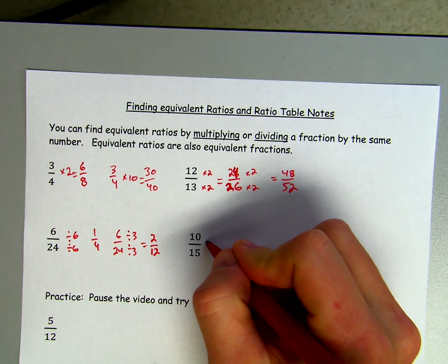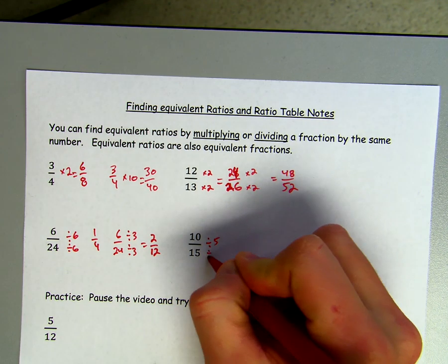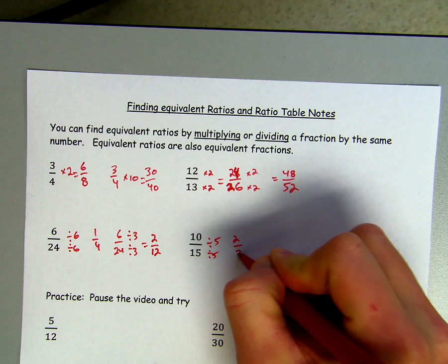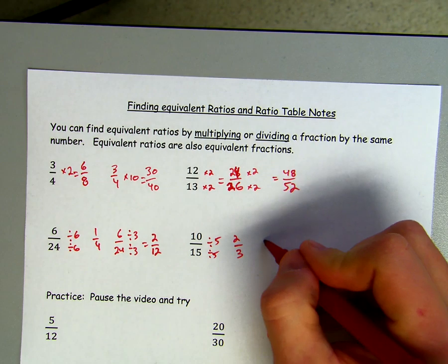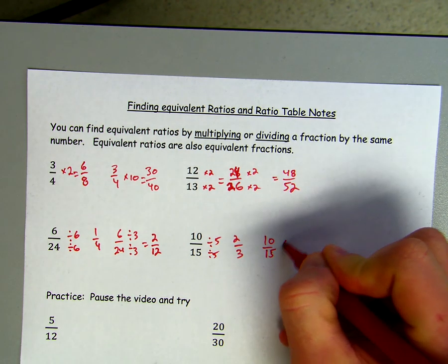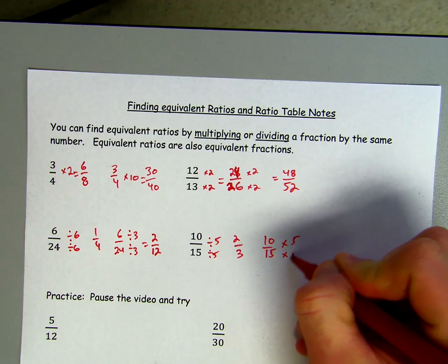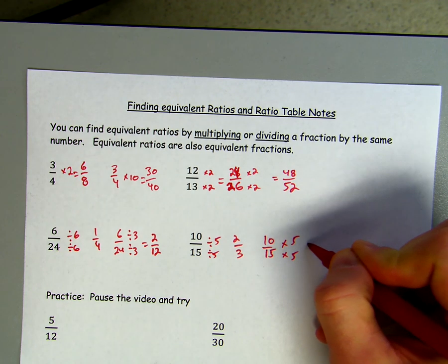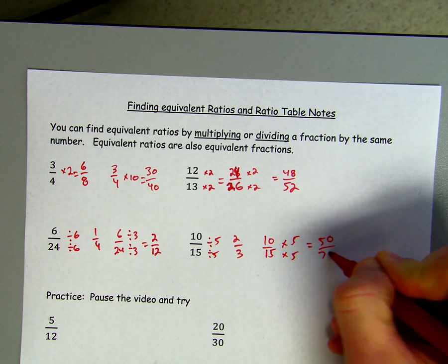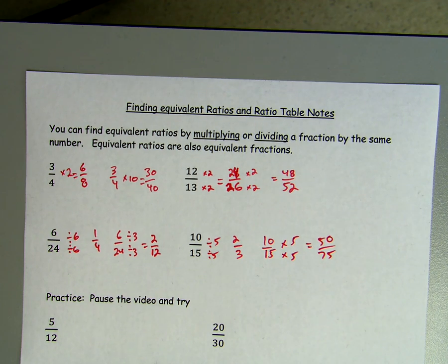Same thing here — we can divide the top and the bottom by 5 and you would get 2/3. Or I could multiply by 5, top and bottom, and I get 50/75. Those are equivalent as well.